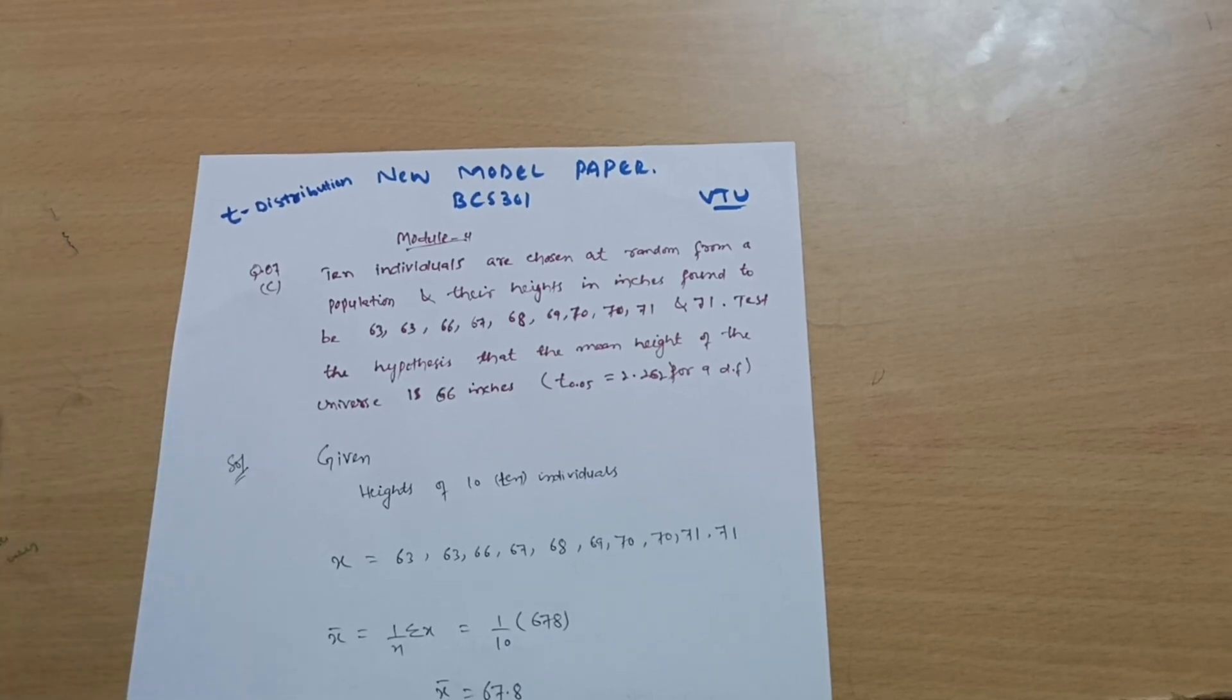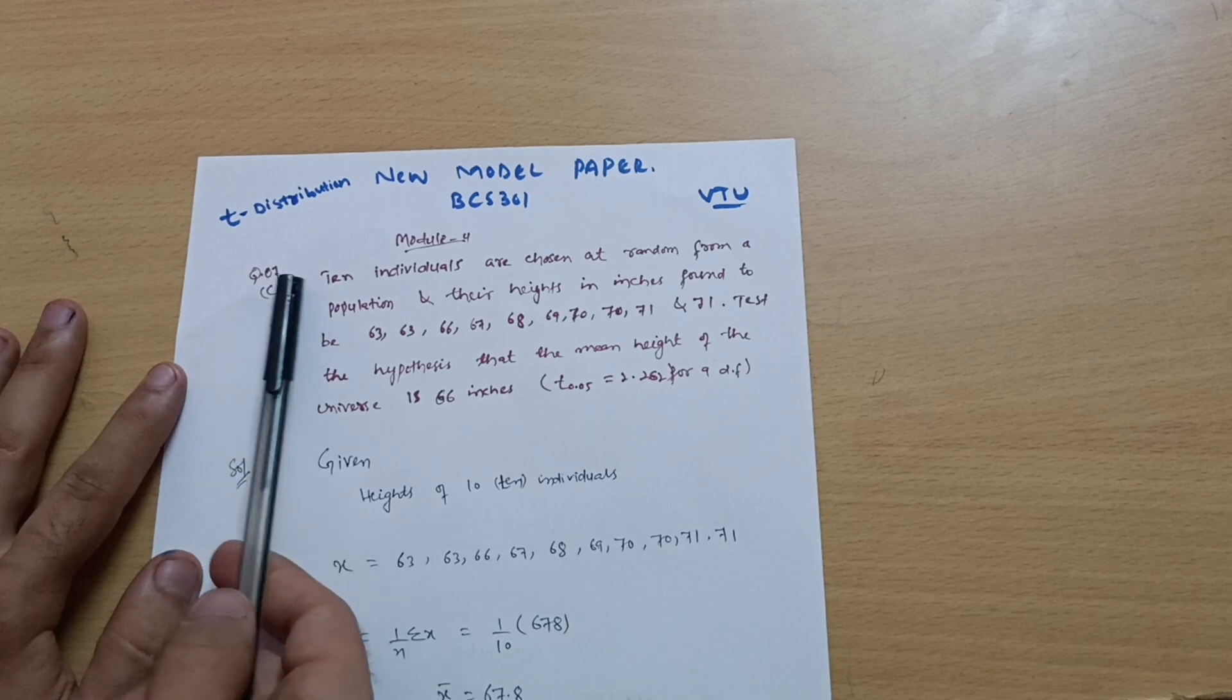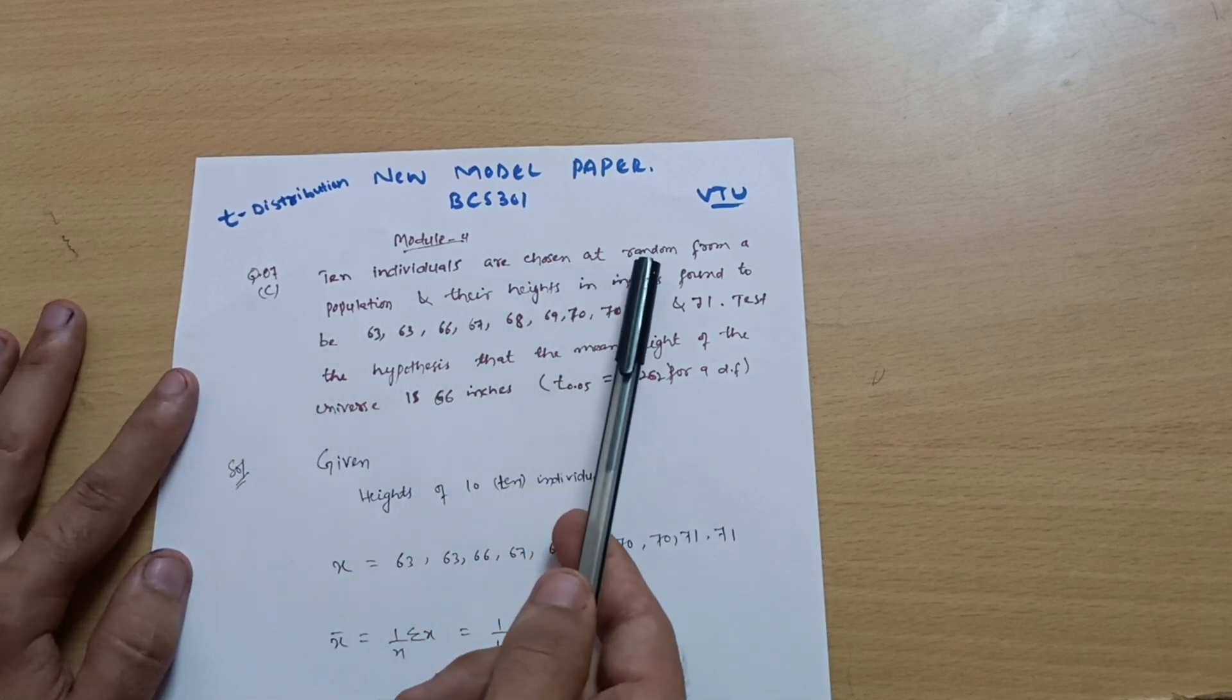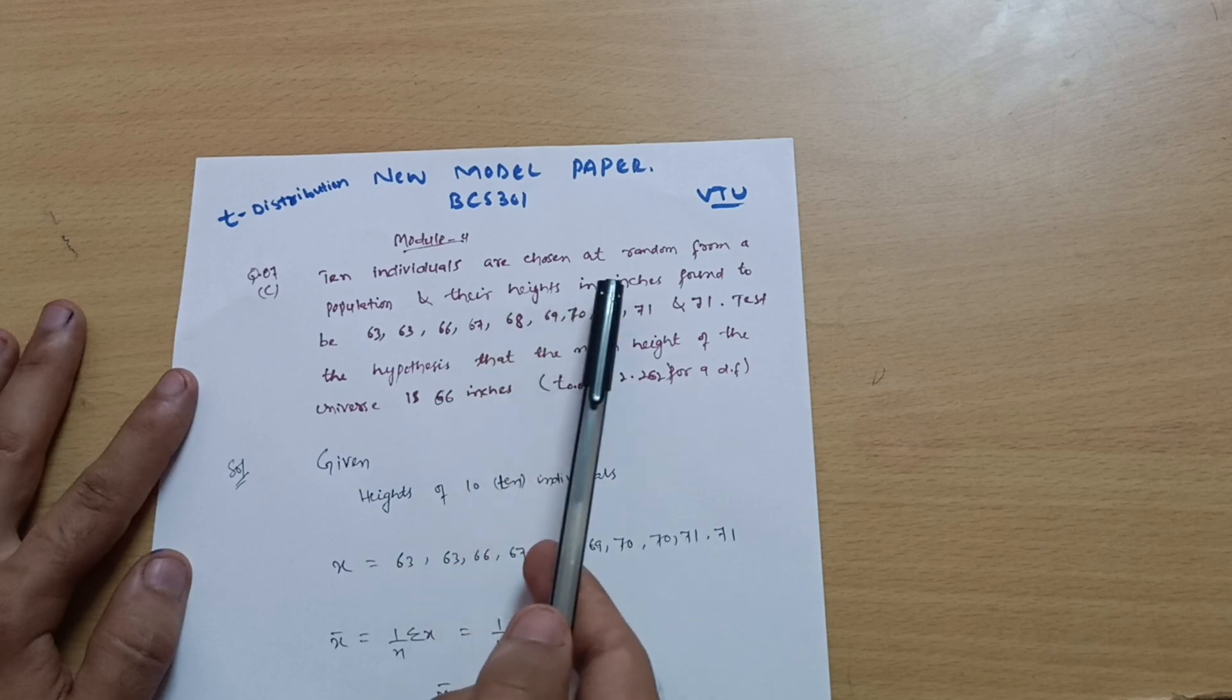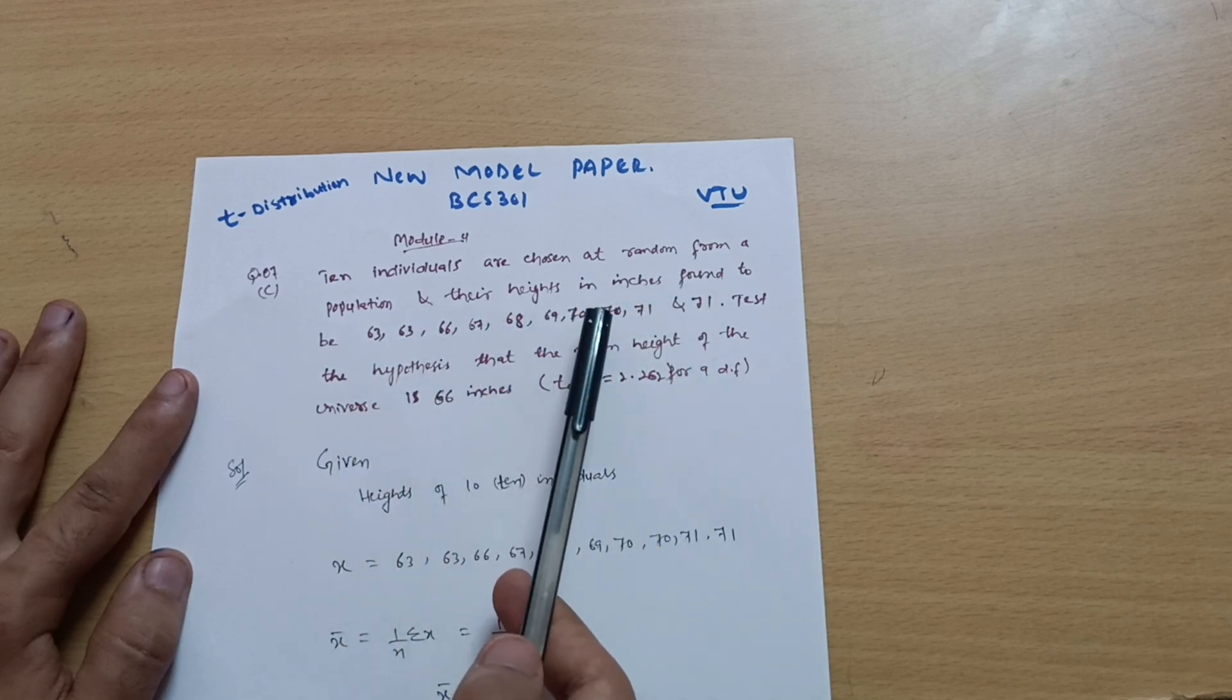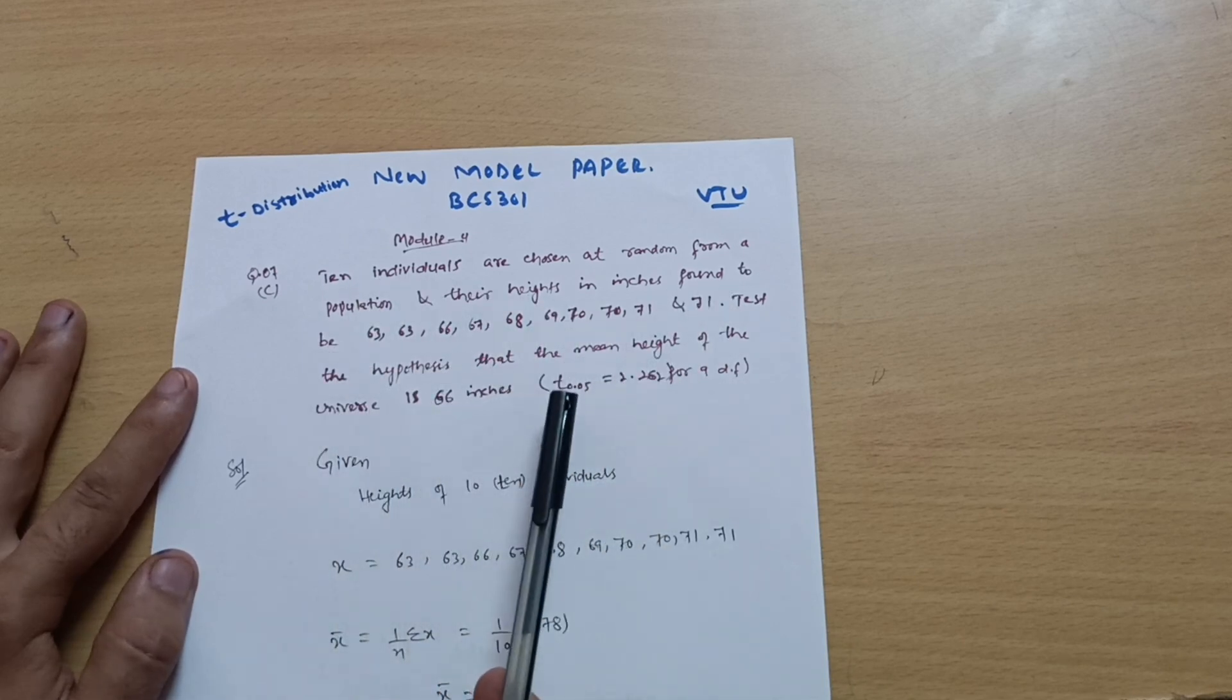Dear friends, welcome back. We are discussing the model question paper. In this video, I will be explaining question number 7c from model 4. Ten individuals are chosen at random from a population, their heights in inches found to be. So these are the heights: 63, 63, likewise. These are the heights of the ten individuals. Test the hypothesis that the mean height of the universe is 66 inches.